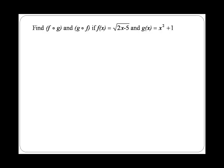Imagine that we are given two functions: f of x, which is equal to the square root of 2x minus 5, and also g of x, which is equal to x squared plus 1. We are asked to find f composed with g, but also g composed with f.